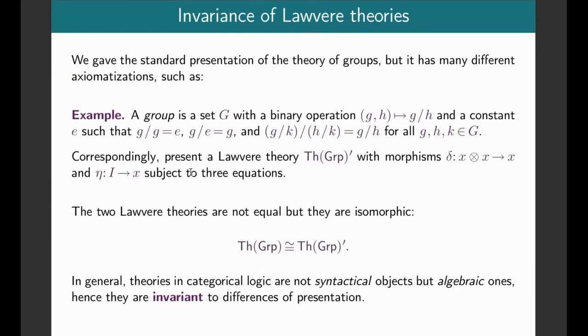These categories aren't equal, but they are isomorphic. The point here is that theories in categorical logic are not syntactical things, they're algebraic ones, and hence they're invariant to differences of presentation. If you've learned about groups in abstract algebra, there are different ways of presenting a group, but they both define the same mathematical object up to isomorphism.